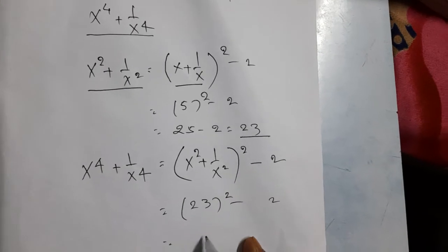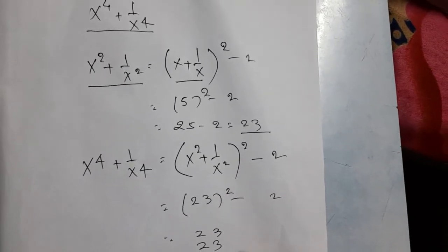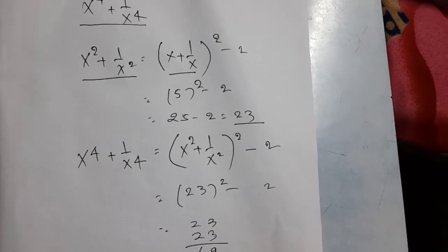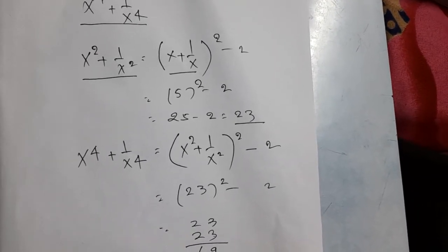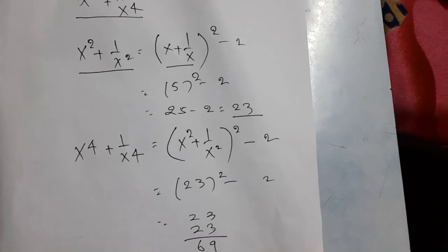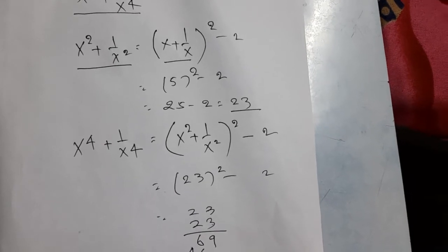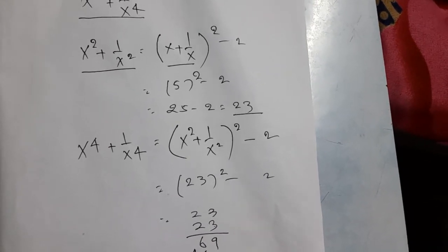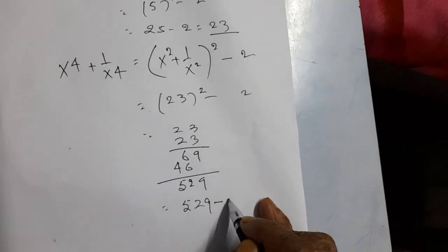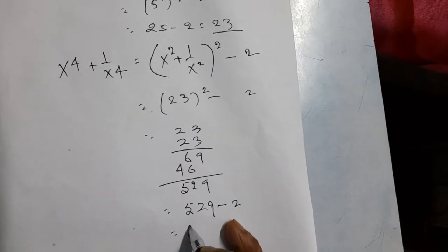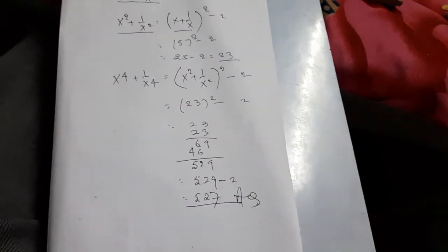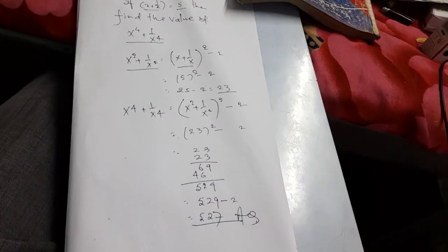So it will be 23 times 23... 9, 6 plus 6 is 12 carry 1, 5... 529 minus 2, and that is 527. This is the answer. 527 is the answer.